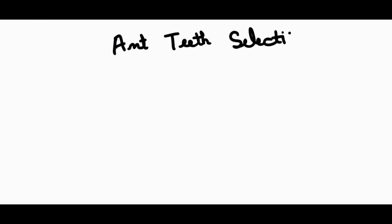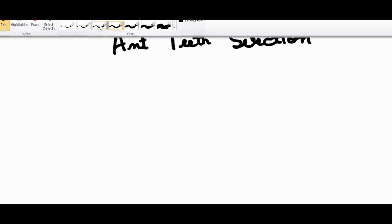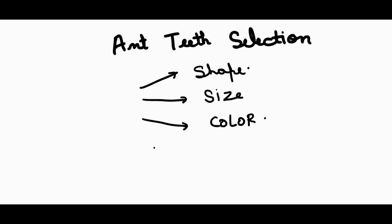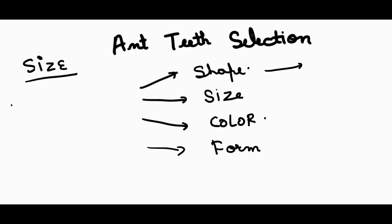For the selection of anterior teeth, we consider factors like shape, size, color, and form. Let us discuss them one by one. The first is the size of the anterior teeth, and the following methods are used to guide the selection of size.